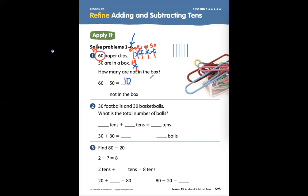We can also think about it like this. I can't say that the answer is 1, but I can say the answer is 1 ten because the value of 1 ten equals 10 ones. There are 10 paperclips not in the box.